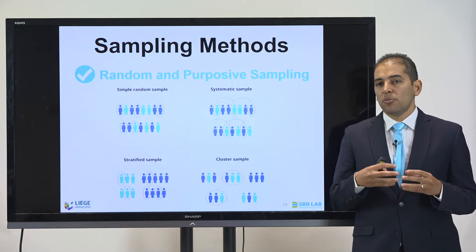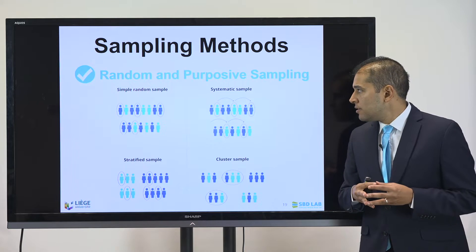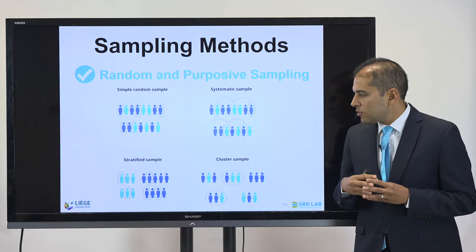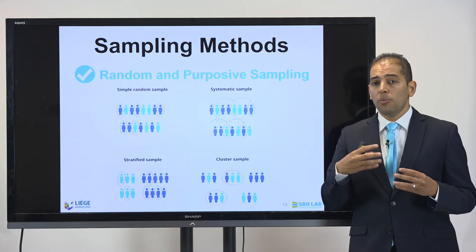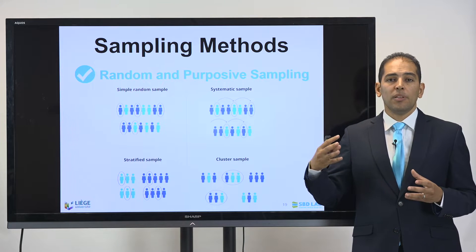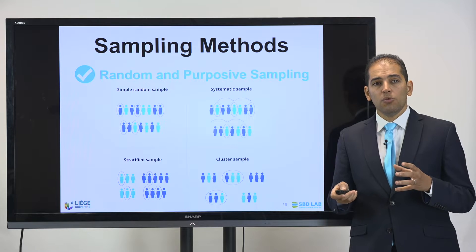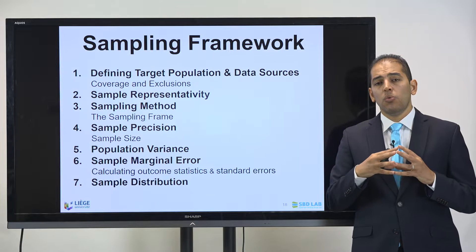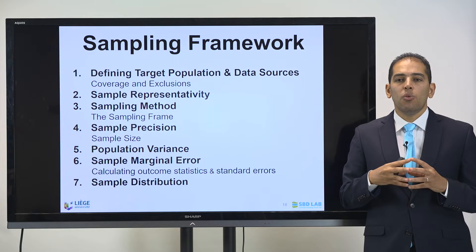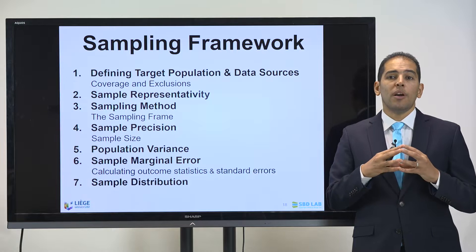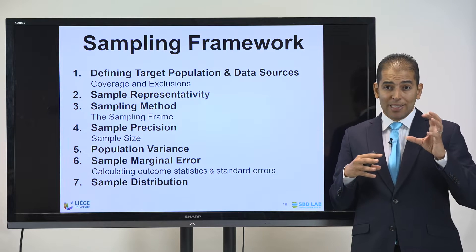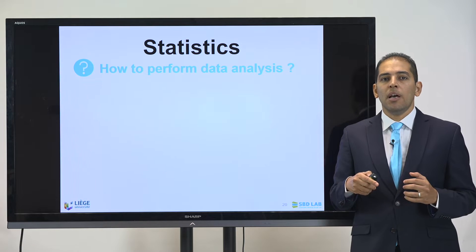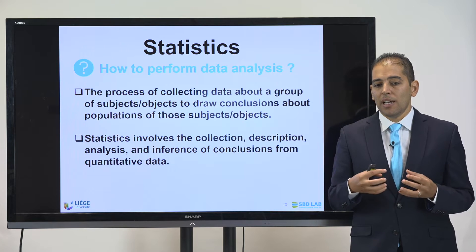Some examples of sampling methods include random or purposive sampling such as simple random sample or systematic sample, stratified sample, cluster sample, and snowball sampling. The sampling method will be point number three within your sampling framework. One of the essential steps when conducting observational research is to inquire about your sampling framework, because there we will find answers to all these questions including the sampling methods and also how you will perform your statistical analysis.